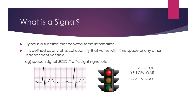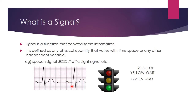For example, consider this traffic light signal. Here we have three colors: red, yellow, and green. If the red light glows, we know we have to stop; yellow light means wait; and green light means go. From this we are getting some information, so it is called a signal. Another example is the ECG signal — from this we get information about our heart rate. So it is called a signal.